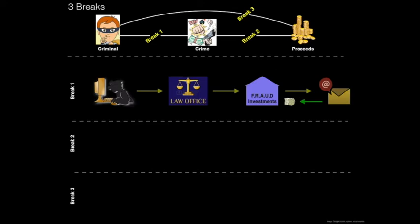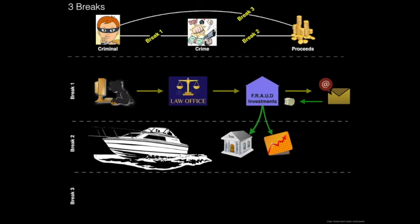In break two, as an alternative to placing money under the mattress, the fraudster arranges for the company he controls to open a bank account and brokerage account into which the money is transferred. The fraudster then transforms the proceeds from their original form of cash into a yacht — usually moored in a Mediterranean harbour — through a series of share and currency transactions.